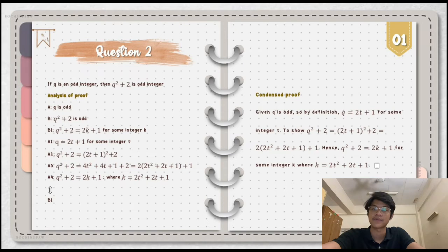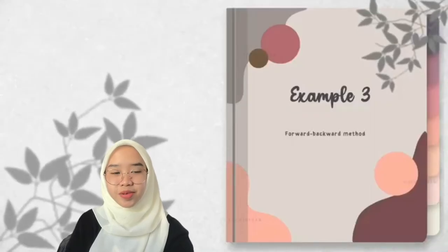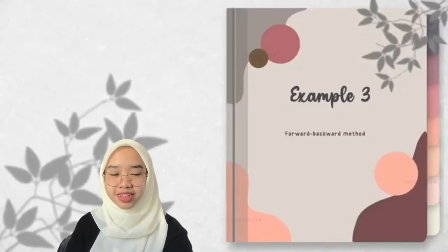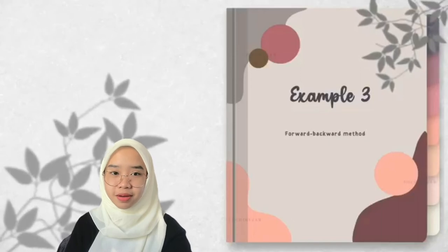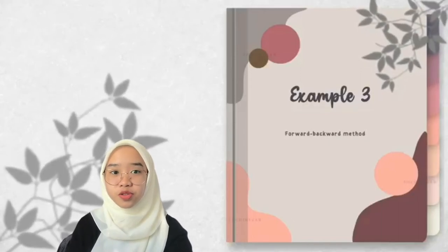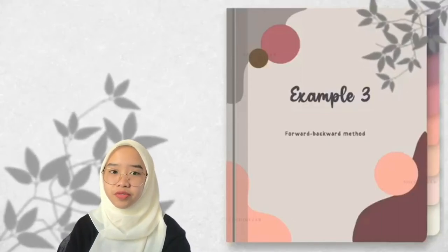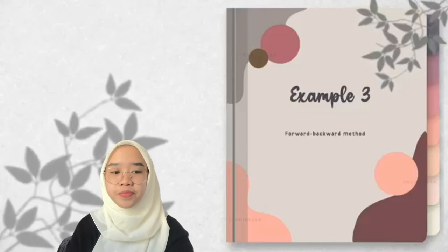Don't forget to put a small box at the end of the proof to show that we have reached the conclusion. Assalamualaikum warahmatullahi wabarakatuh. My name is Fatina Ashwa binti Tiramli and my matrix number is 2020458478.